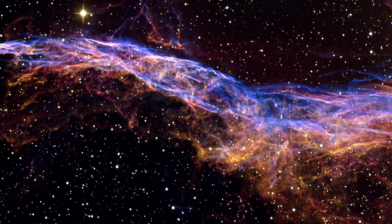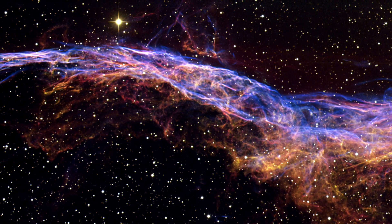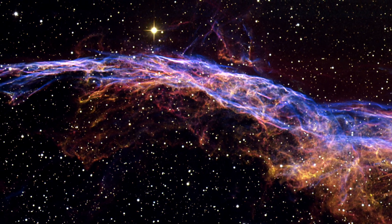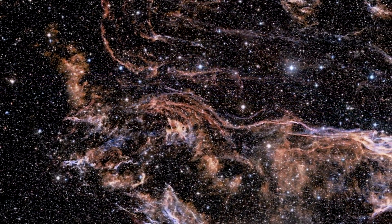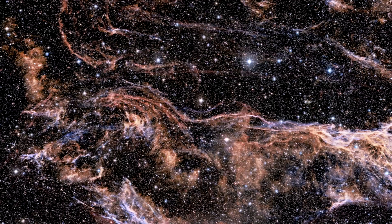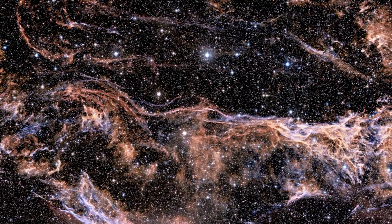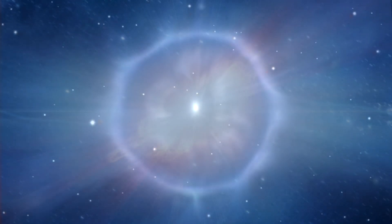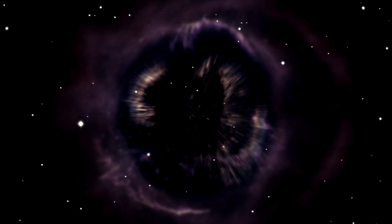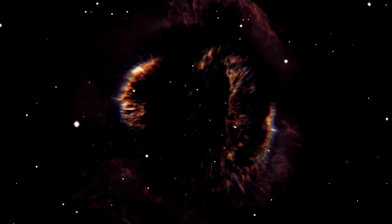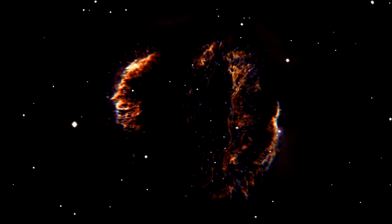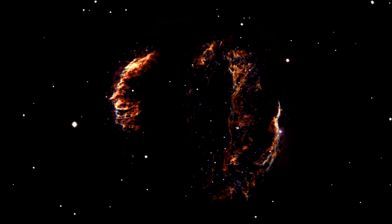The intertwined rope-like filaments of gas in the Veil Nebula result from the enormous energy released as the fast-moving debris from the supernova explosion plows into the surroundings and creates a shock front. This shock, driven by debris moving at 600,000 kilometers per hour, heats the gas to millions of degrees. It is the subsequent cooling of this material that produces the brilliantly colored glows.